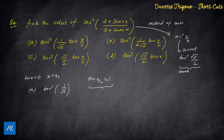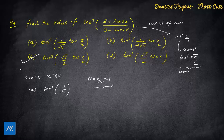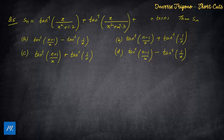There is no rule book for shortcuts — it may happen that options A and C both match, in which case we need to solve further. But if only one matches, that is the answer. Let's move to the next and final problem of today's session.